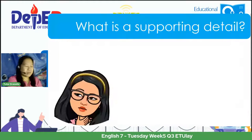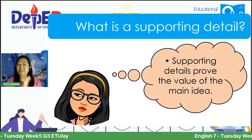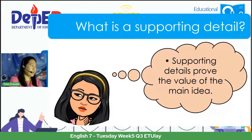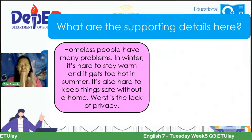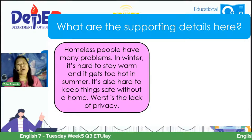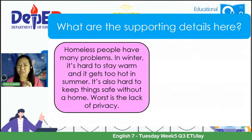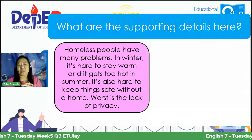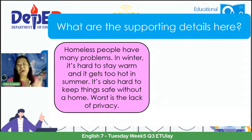Next, what about a supporting detail? The supporting details prove the value of the main idea. Let us go back to the same paragraph. We already identified sentence one as the topic sentence. Now let us look for the supporting details — what is the role of sentence two, sentence three, and sentence four?